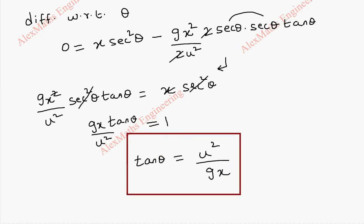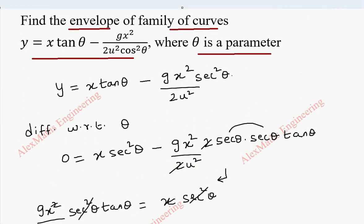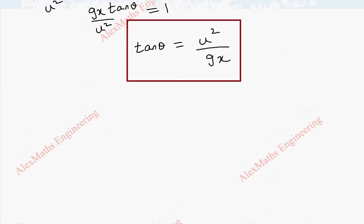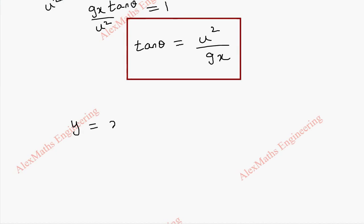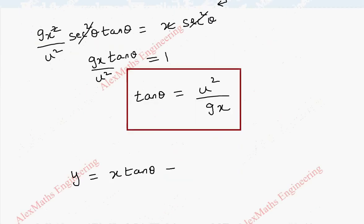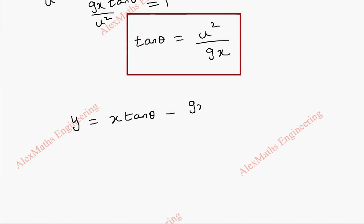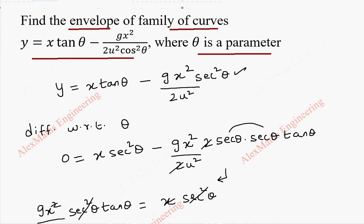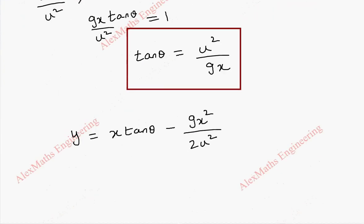Now we have to replace this in the equation, but we have secant squared theta. So writing secant squared in terms of tan theta makes it easier to substitute. Rewriting the equation: y equals x tan theta minus g x squared by 2u squared, and secant squared theta can be written as 1 plus tan squared theta.